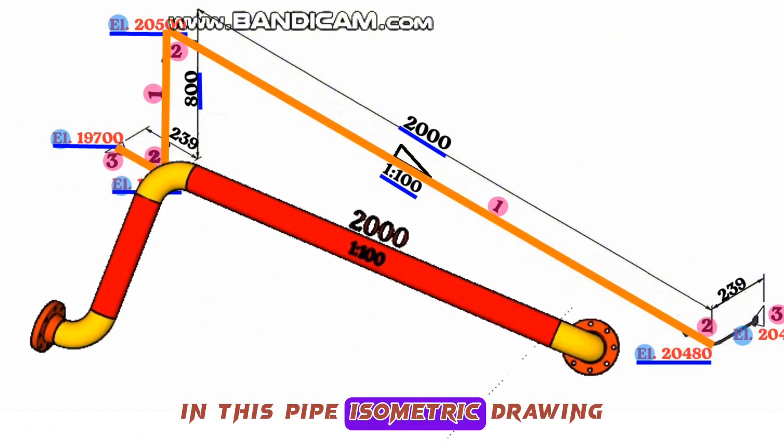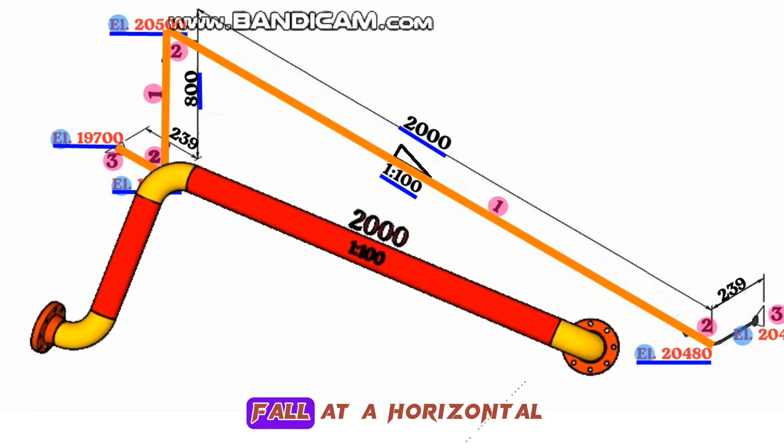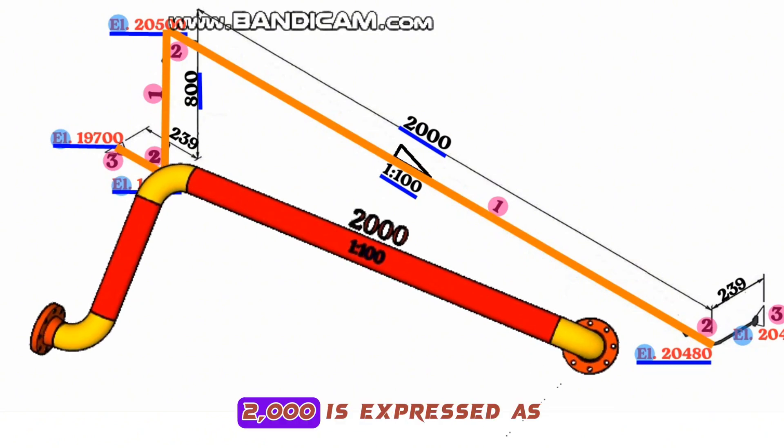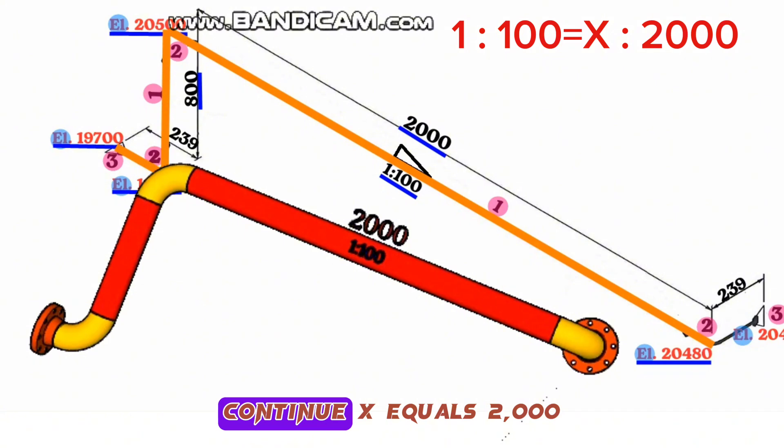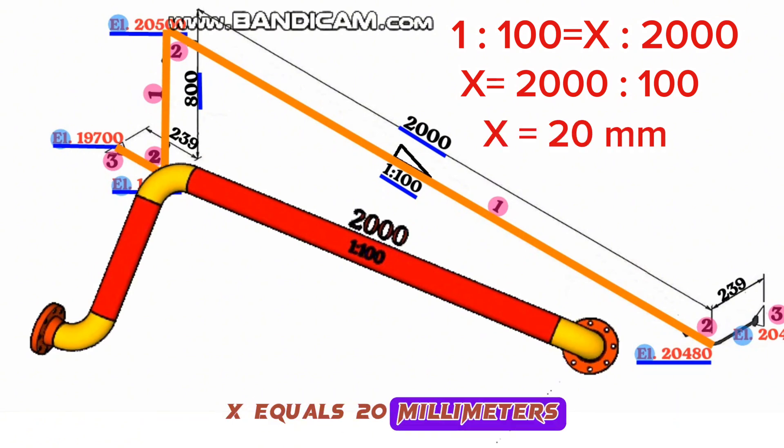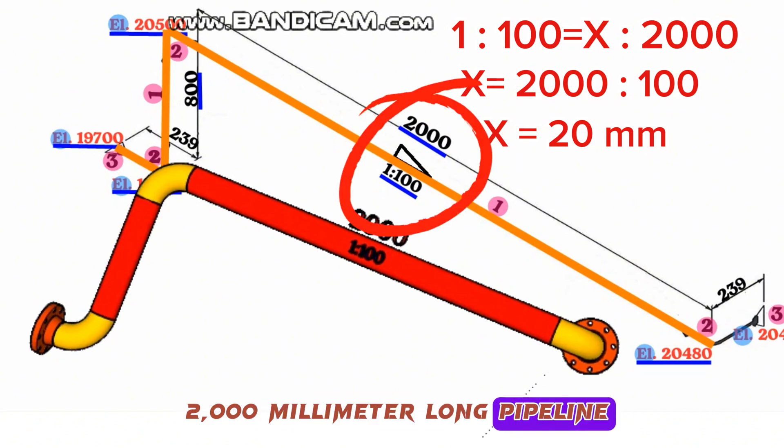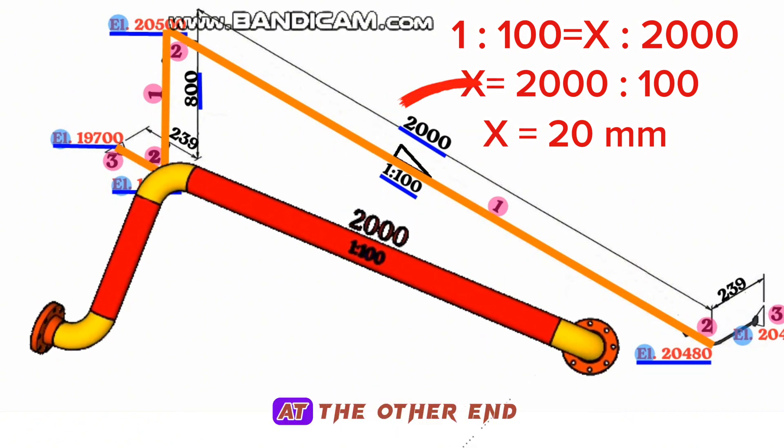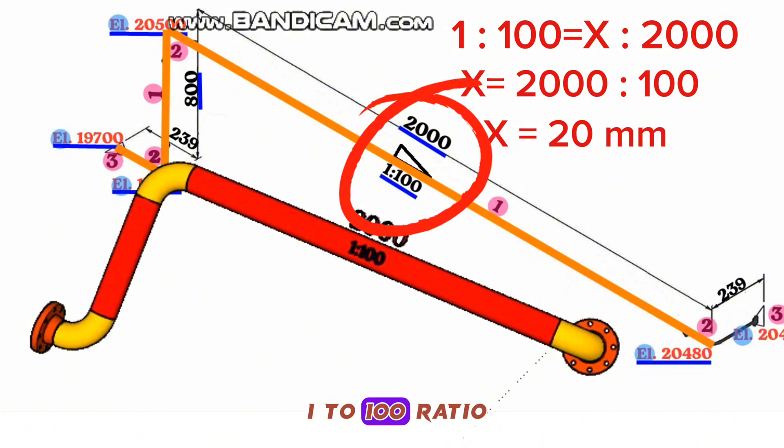In this pipe isometric drawing, the slope of the fall at a horizontal distance of 2,000 is expressed as a ratio of 1 to 100. 1 to 100 equals x to 2,000 ratio. X equals 2,000 divided by 100 ratio. Continue the calculation and found x equals 20 millimeters. This means that the 2,000 millimeter long pipeline falls 20 millimeters down at the other end with a slope of 1 to 100 ratio.